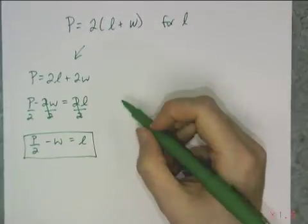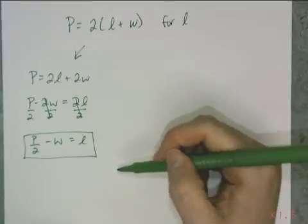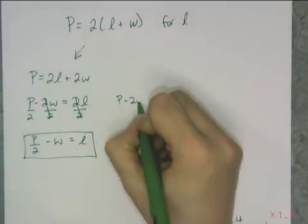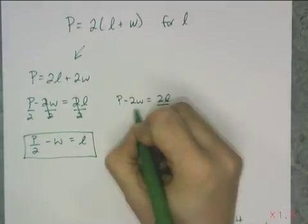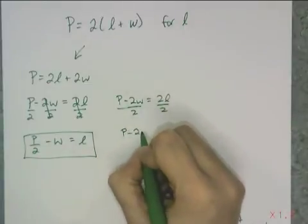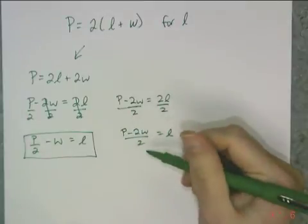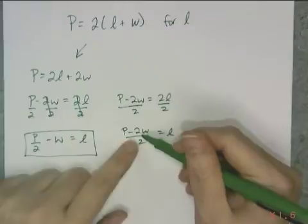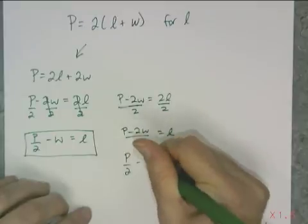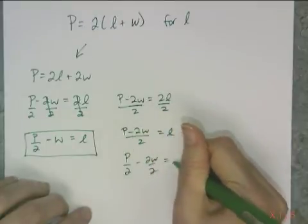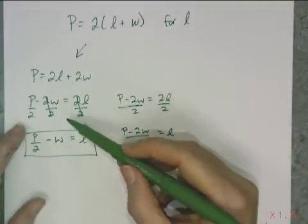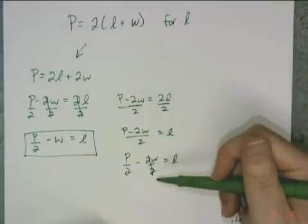If you distribute, make sure there's nothing left to simplify. A common mistake is to stop at P minus 2w over 2 equals l without simplifying further. That fraction is not fully simplified — you have to rewrite it by dividing each term by 2 so the 2s cancel, giving the correct answer. So if you distribute and then divide, make sure you divide piecewise to get it in the right format.